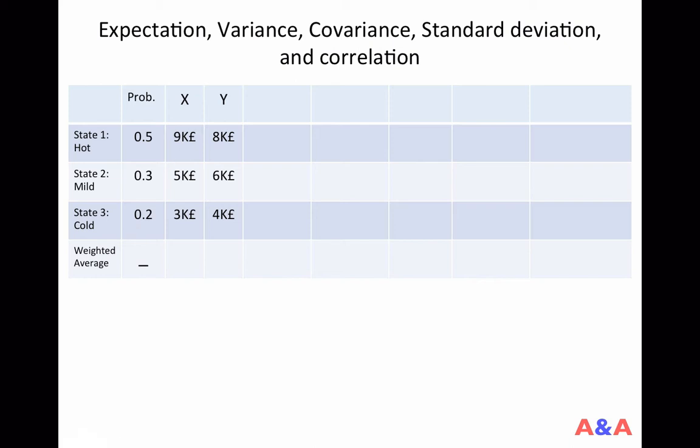A random variable is a variable whose value depends on the realized state of nature. So here are two examples of such random variables, X and Y.